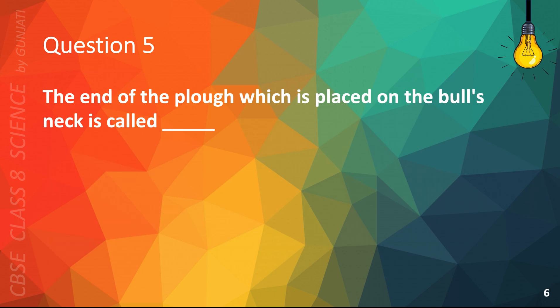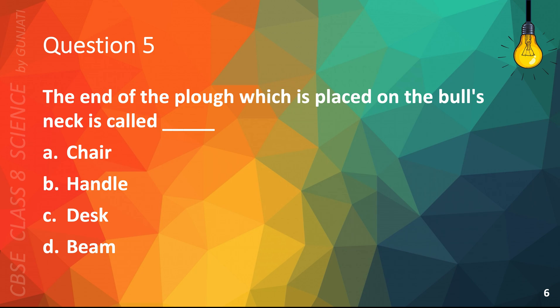Question 5. The end of the plow, which is placed on the bull's neck, is called A. Chair, B. Handle, C. Desk, or D. Beam. The correct answer is D. Beam.